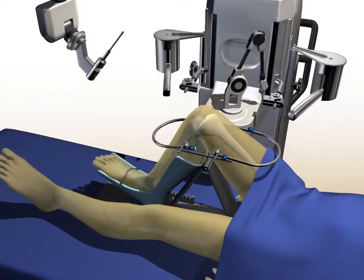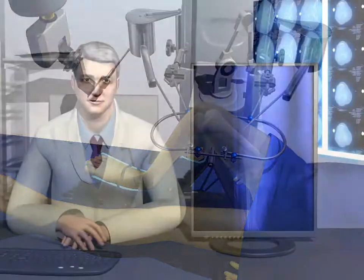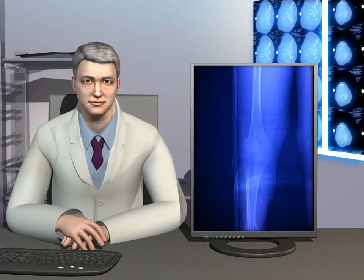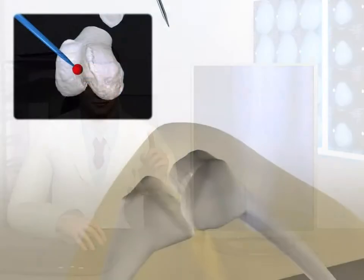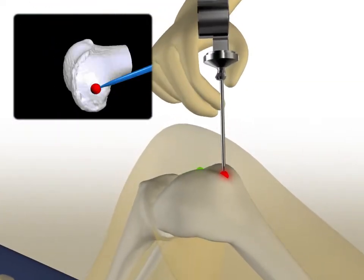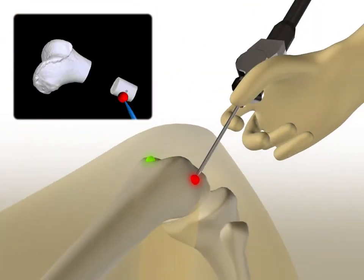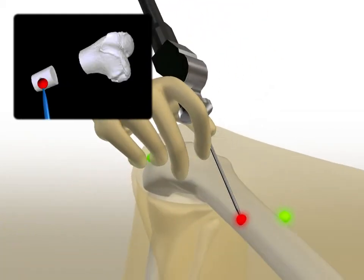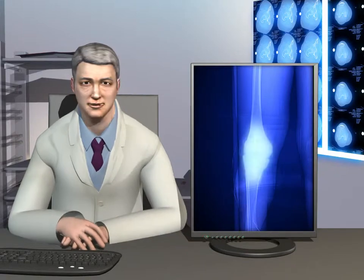RoboDoc surgery includes three stages: registration and confirmation, and milling and insertion of implant. First, the surgeon will register the bone by applying a probe on its surface.